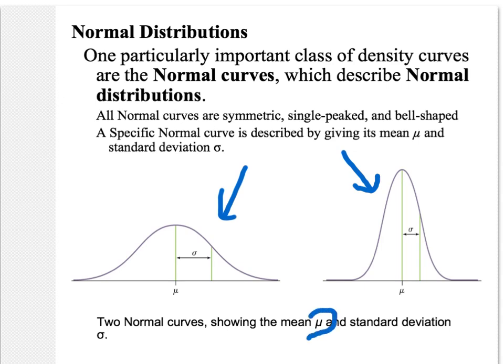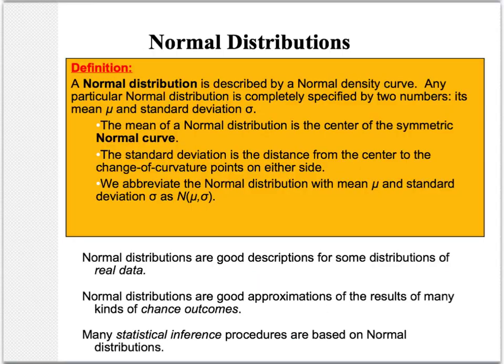Again, we only need two numbers to describe any bell curve: mean and standard deviation. A normal distribution is called a normal density curve. Remember, a density curve is where the area under the curve equals exactly one. The normal distribution is described by its center, which we call the mean, and the standard deviation is the distance from the center to the change of curvature points on either side.